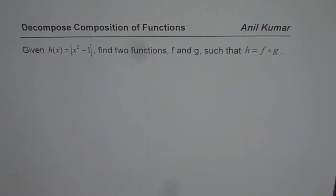Given h of x equals to absolute value of x square minus 1, find two functions f and g such that h equals to f of g.